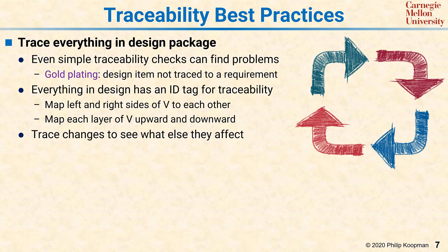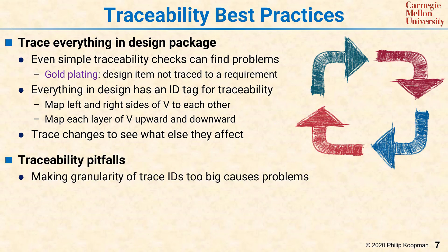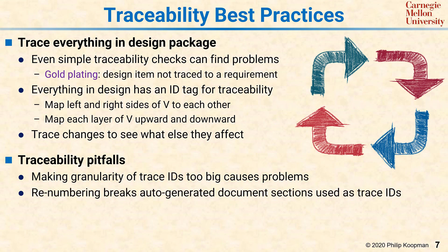Traceability can pay off later in the lifecycle by showing how pieces are related. If you have to make a change, you can go back to the traceability tables to find, for example, which test cases also need to change when you modify a particular software function. There are a number of traceability pitfalls. The most common is that IDs are at too big a chunk — for example, a section number in a large requirements document with tens or hundreds of paragraphs. If you trace at that level, it's very difficult to tell exactly what you're tracing to, and you're likely to miss things. Another pitfall is using auto-numbering in word processing documents: adding a paragraph or making an edit can renumber everything and break your traceability. For that reason, traceability numbers are typically hand-entered with an alphanumeric format to avoid that problem.